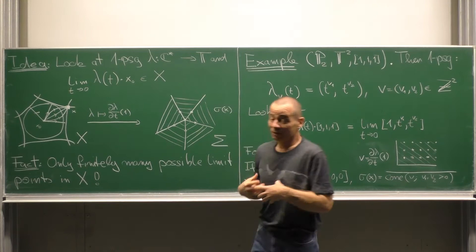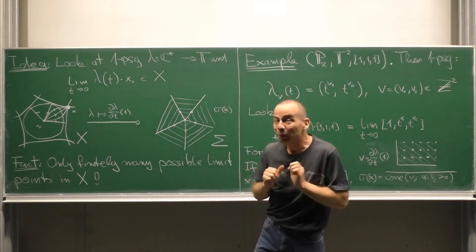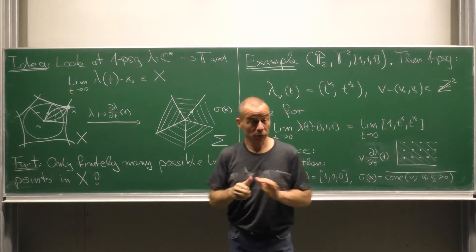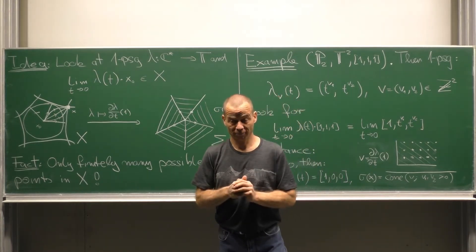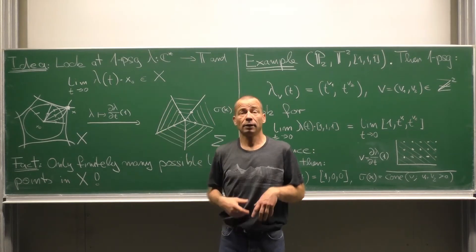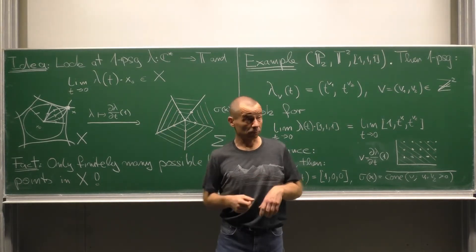The observation is that in the case of a normal torus variety all these lattice cones fit together to a lattice fan. Let us test this idea in a concrete example.